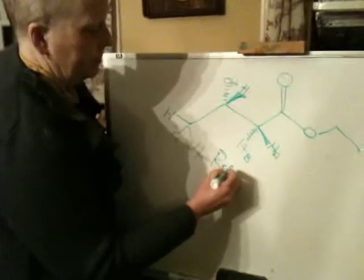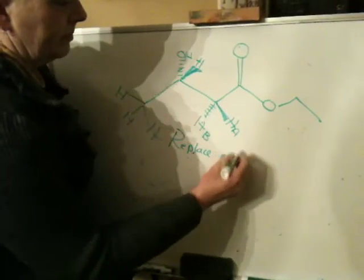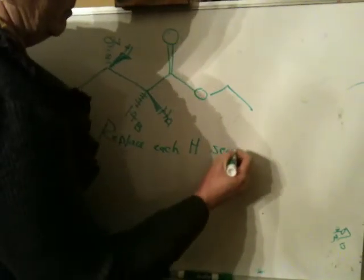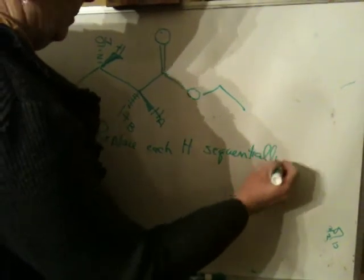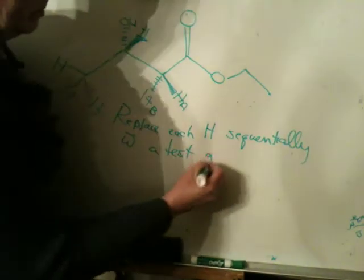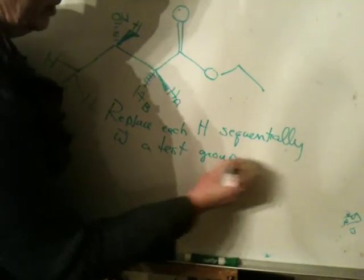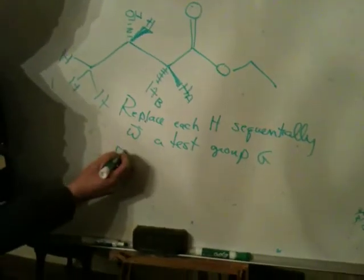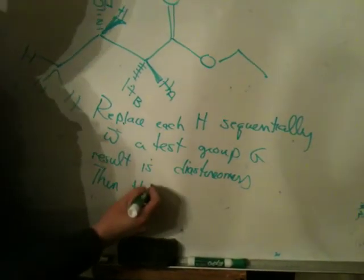If we replace each hydrogen sequentially with a test group G, and if the result is diastereomers, then the hydrogens are called diastereotopic.